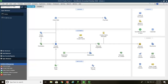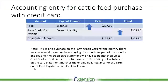Now let's go back to PowerPoint and look at the accounting entry. Feed, which is an expense account, is debited $227.80. In the QuickBooks entry I just made, I charged to livestock supplies — I could have charged it to feed; either one is fine depending on the way you keep the books for your farm. The offsetting entry is farm credit card payable, which is a current liability, for $227.80. Total debits and credits: $227.80.